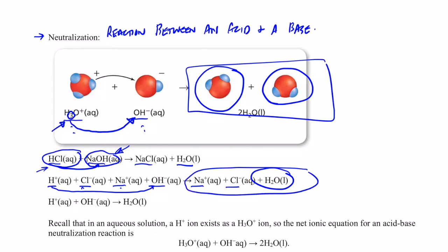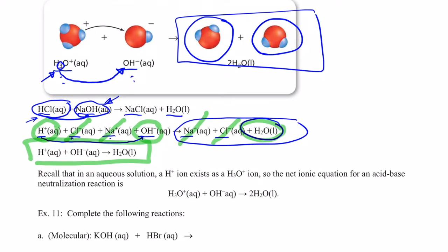There are spectator ions in this equation, so let's cancel those — chloride on both sides and sodium on both sides. After the spectators are removed, H+ and OH- make H2O, and that's the net ionic equation. In aqueous solution, hydrogen ions actually exist as hydronium ions H3O+, so the actual net ionic equation is H3O+ and OH- forming two waters.